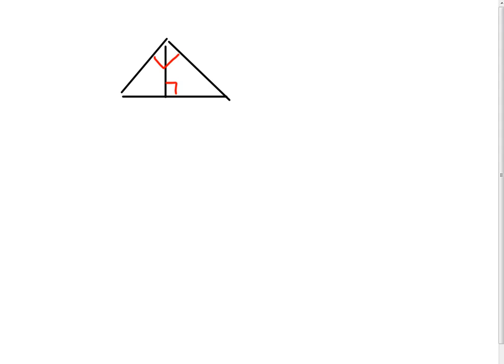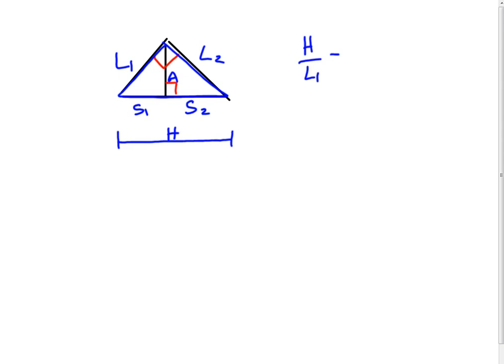We have a little series of proportions that we use. We need to understand the hypotenuse — that's the hypotenuse for the large triangle — and then we call this leg one and leg two. It doesn't really matter which one you call leg one and leg two, but if we call one leg one, we need to call this little section side one and this other section side two. And then this is the altitude.